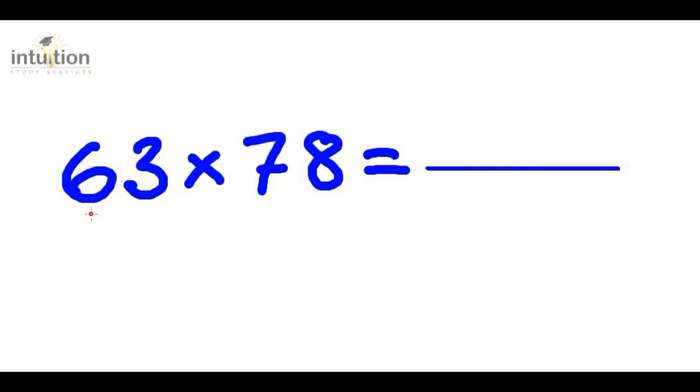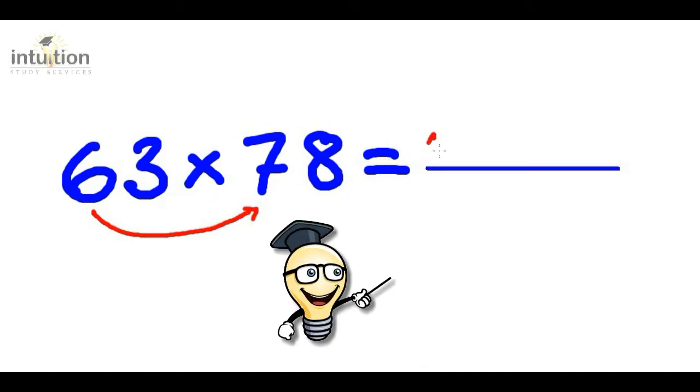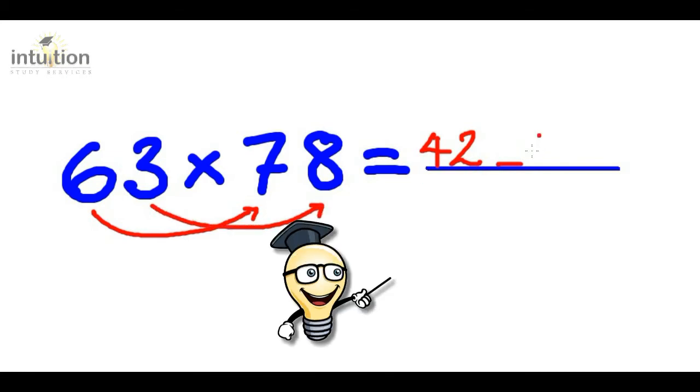Okay, so first of all, we multiply the first digits of each number. So that's 6 times 7 and that gives 42. Then we leave a gap. Then we multiply the last digits. So we do 3 times 8 and that gives 24. So what we need to do with that 2, we need to carry it. So we put it over here.